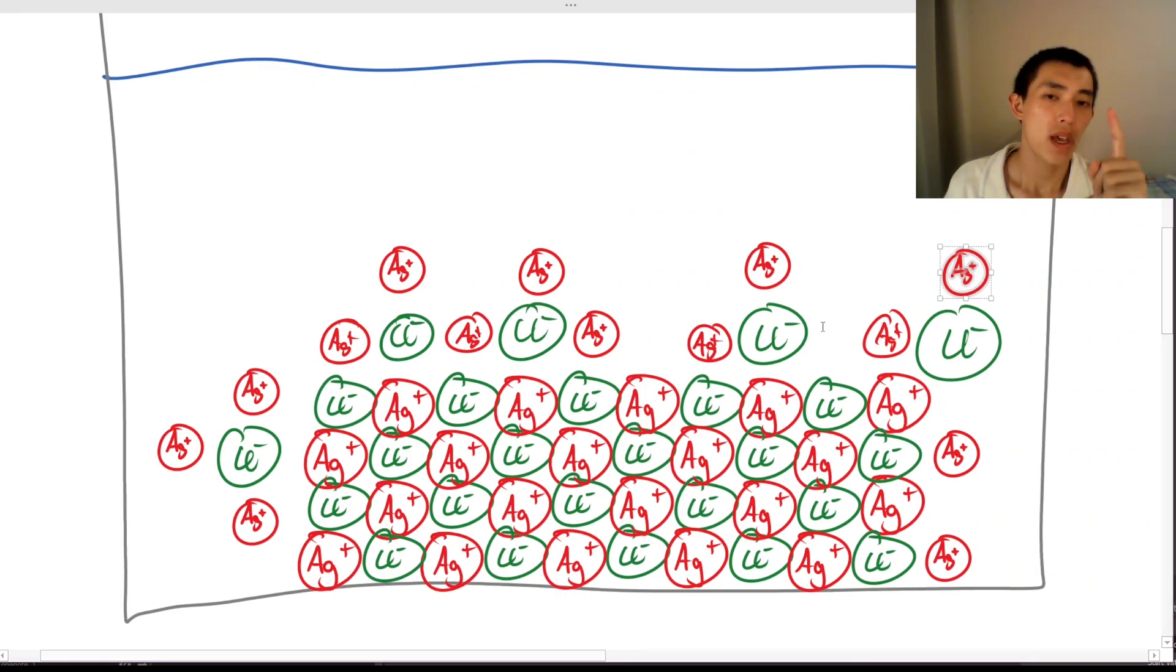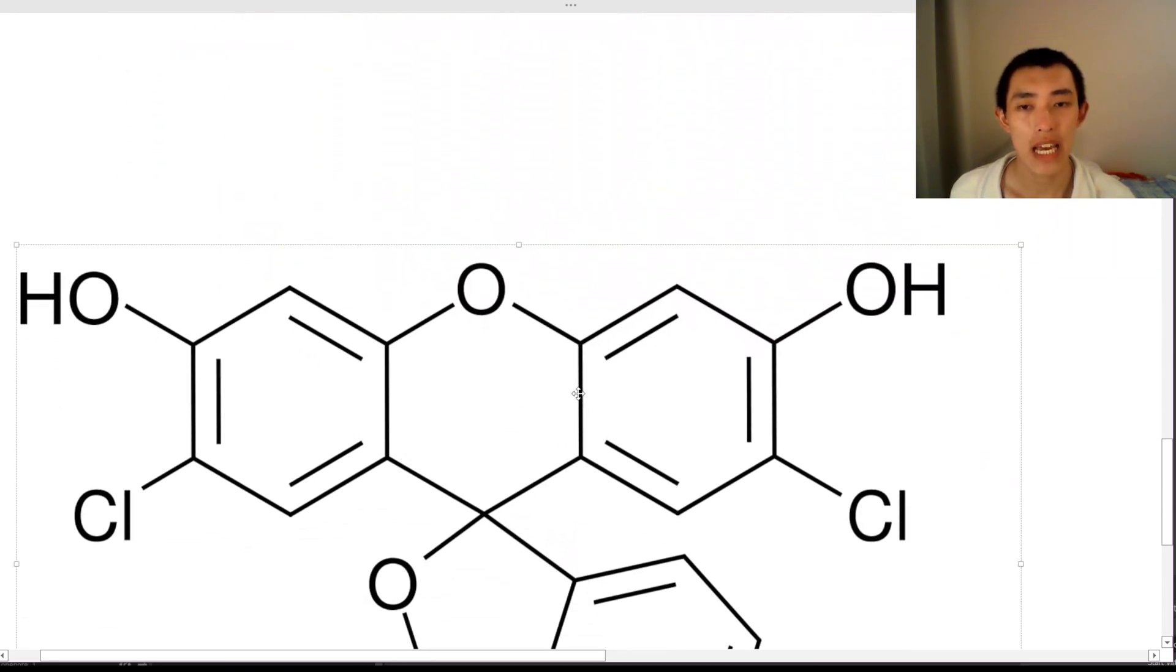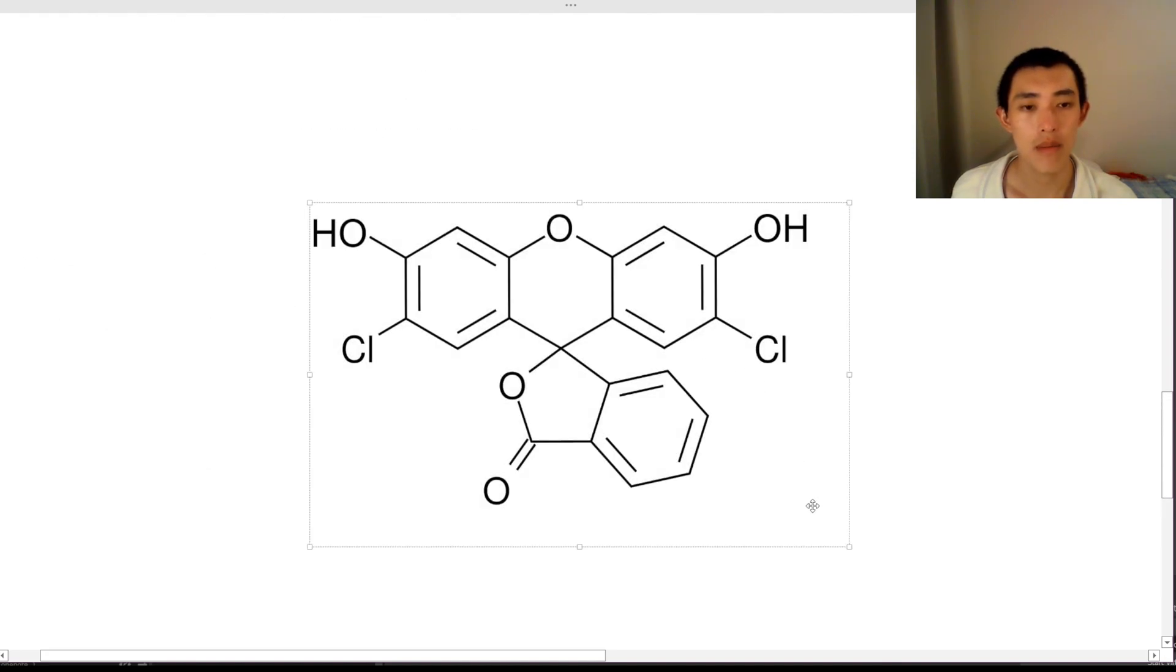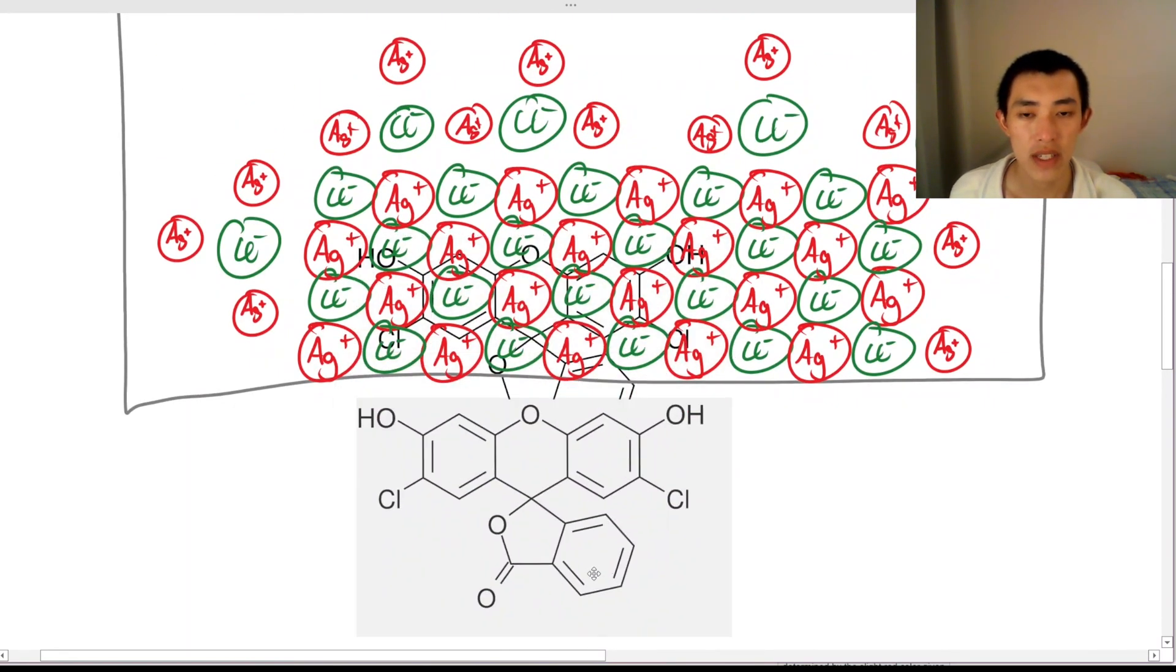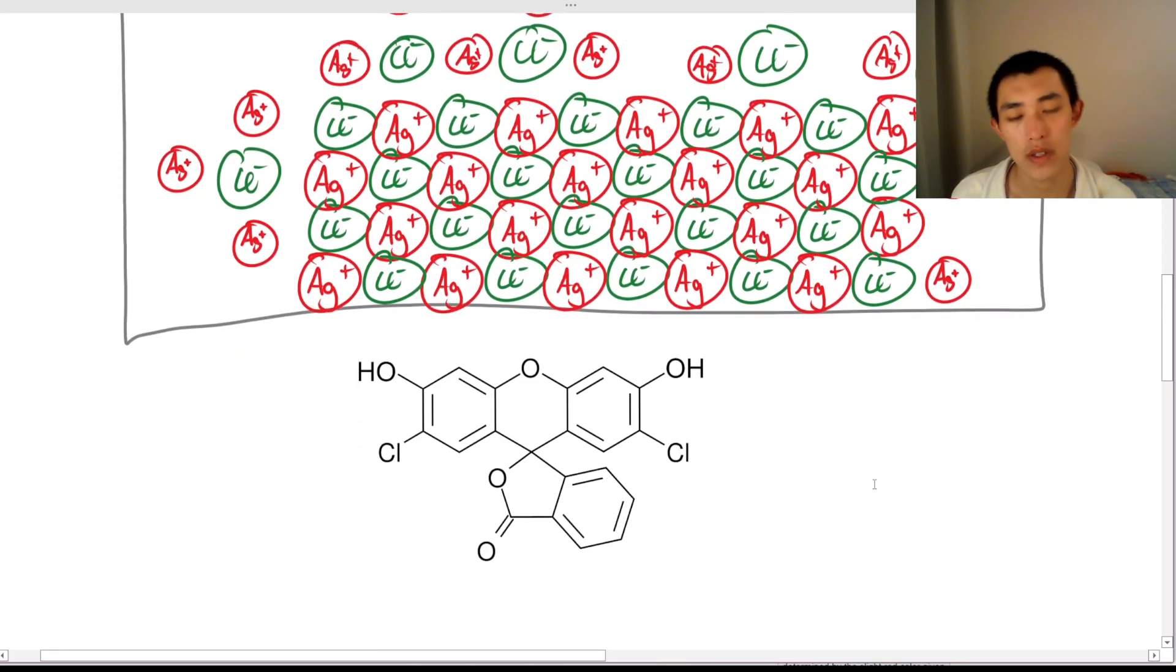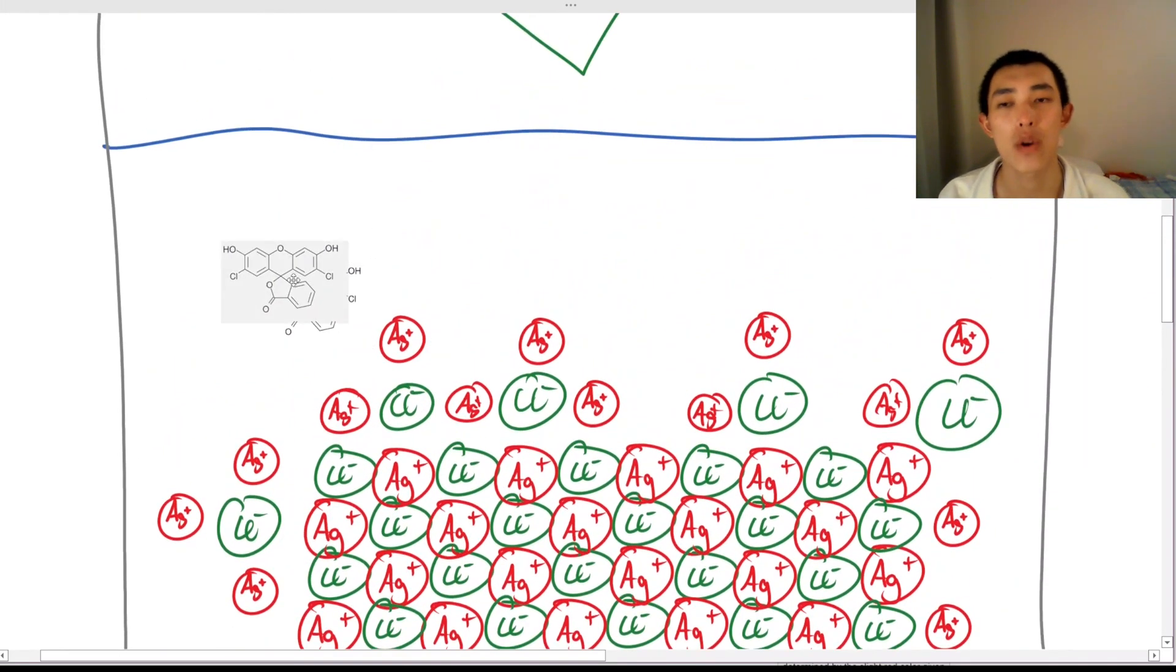Who cares? Well, the reason why we care is because what actually happens is that we have added an indicator. I didn't tell that to you earlier, but we've actually added an indicator. This is the indicator. It has a very long name. Its name is chlorofluorescein. So, if you haven't seen this representation before... each vertex is actually a carbon. This is Skeletal formula. And there will also be hydrogens coming off it. But we don't draw the hydrogens. So we have this molecule. Now, this molecule is what we call anionic. It's anionic because it tends to have a negative charge. You can imagine that these hydrogens might fall off. And so, the whole thing has a negative charge.